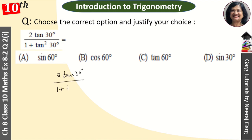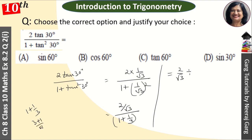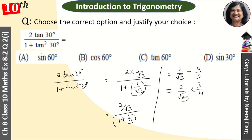Theek hai, values put karenge. 2 tan 30° = 2 × (1/√3), aur denominator mein 1 plus (1/√3)² hoga. Toh numerator aaya 2/√3 aur denominator mein 1 plus 1/3, matlab 3+1/3 = 4/3. Toh expression ban gaya (2/√3) divided by (4/3), jo hai 2/√3 × 3/4.